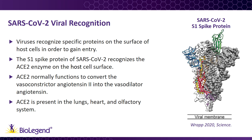ACE2 works to counterbalance the function of a separate enzyme, ACE, by converting the vasoconstrictor angiotensin-2 into the vasodilator angiotensin. In this role, ACE2 is found throughout the body, including the lungs, heart, and olfactory system. While SARS-CoV-2 primarily affects a patient's lung tissue due to its mode of transmission, the presence of ACE2 in most organs suggests that it is likely capable of infecting other tissues as well.